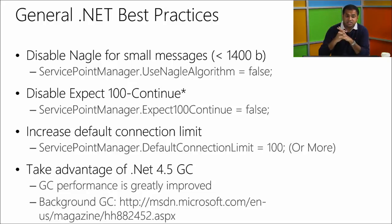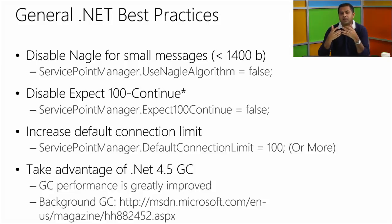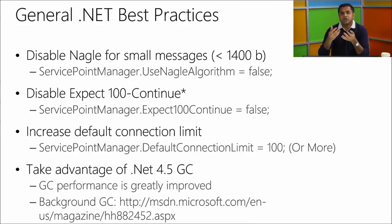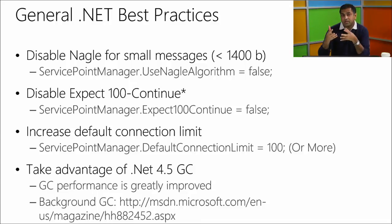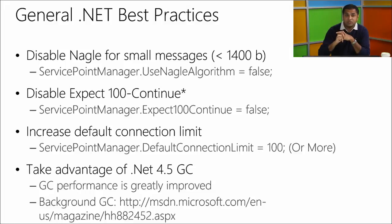Disable Expect 100-Continue — this has an asterisk because you should disable it if you're confident that all your authentication is going through. However, if you're writing an explorer or the user may not give you the right credentials, especially with shared access signatures, you can turn it on since Expect 100-Continue saves some bandwidth. Turn it off when you're confident the request will most likely succeed.